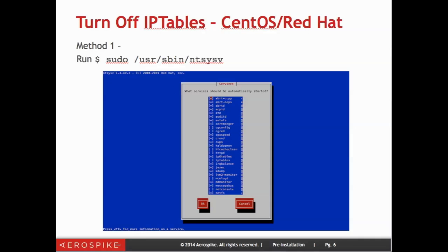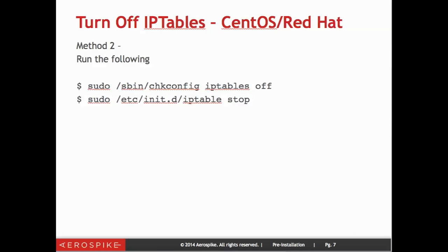If that's all set up, you're good to go. You can also do this from the command line just by issuing the command sudo sbin chkconfig iptables off, and then you also want to turn off the service itself by running sudo etc/init.d iptables stop. You can do either one of those to stop things.